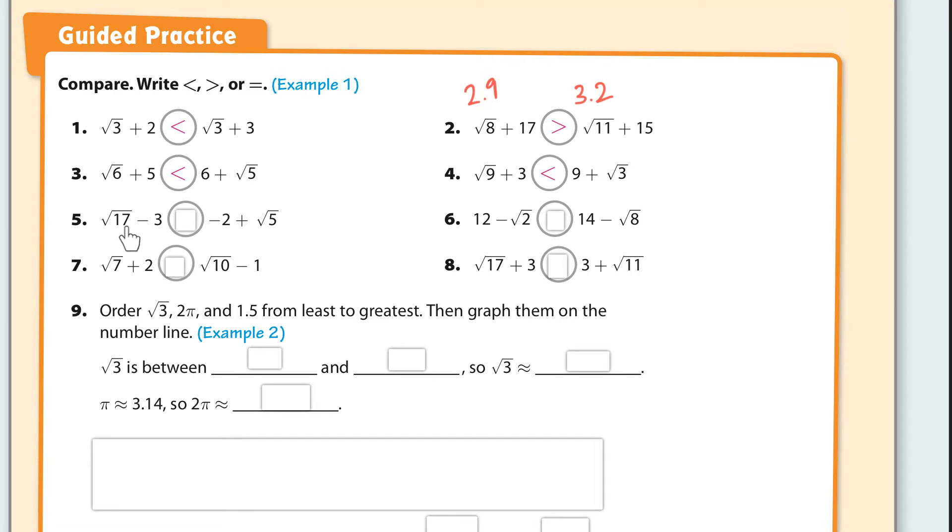So this next one, square root of 17 minus three. Square root of 17 is a little bit more than four because square root of 16 is four. So I'm going to call that about 4.1 minus three. So that's positive. This is just a positive number. I don't even know, it's 0.9. And then this is negative two plus the square root of five is like 2.1. So this is just barely more than that, and this is a little bit more. So I'm calling it open to the left.